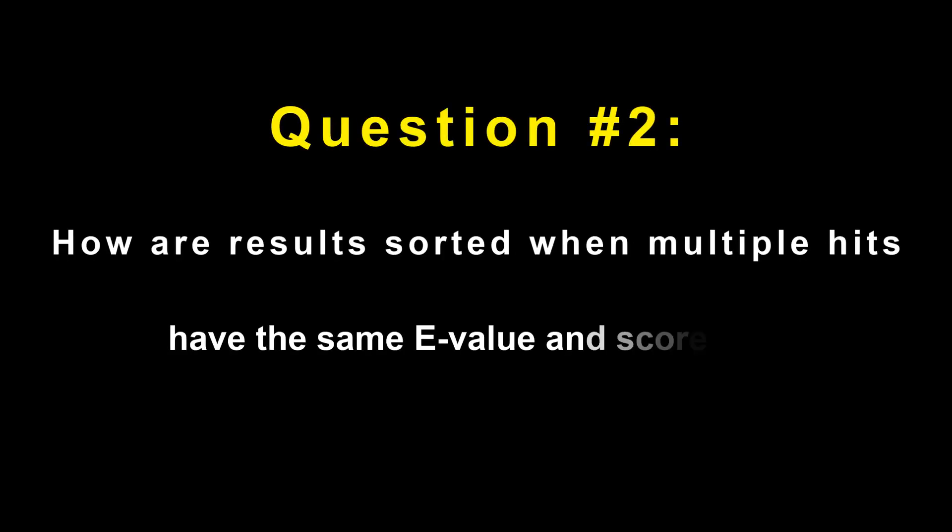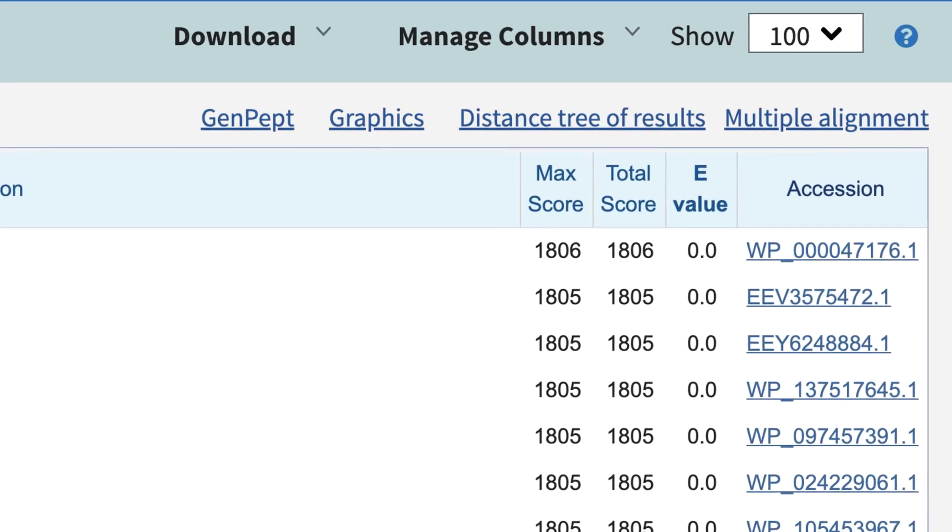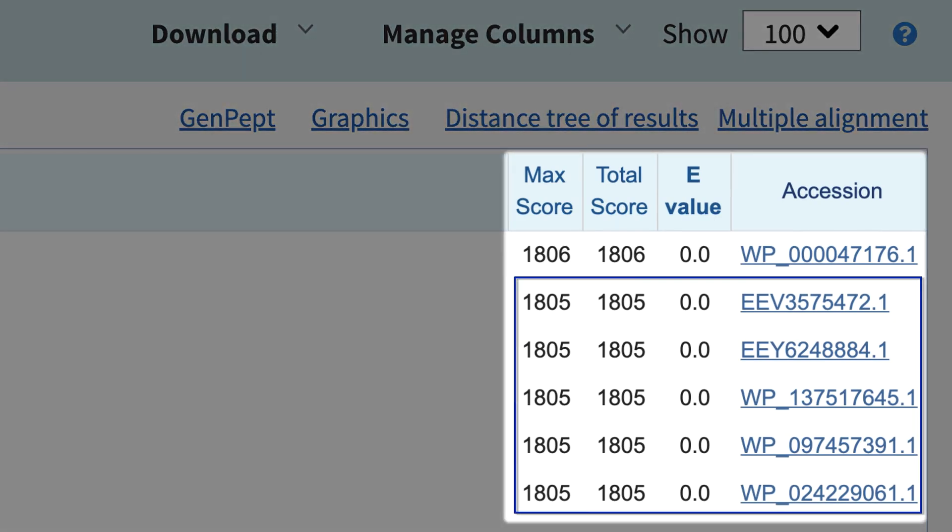Question number two. How are results sorted when multiple hits have the same E-Value and score? In this case, the sorting is essentially random. The order depends on the position of the subject sequences in the database being searched.